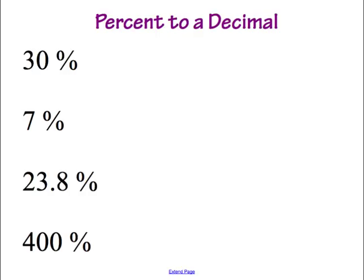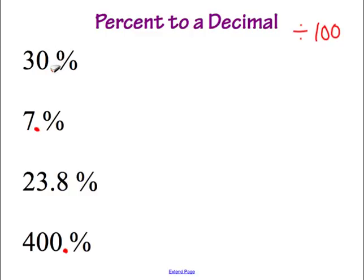We're now going to practice going from a percent to a decimal. The previous example showed us how to go from a decimal to a percent, so now we're doing the opposite. Instead of multiplying by 100, we're going to divide by 100 — so instead of moving two spots to the right, we move two spots to the left. First, let's place our decimals: in 30%, the decimal falls right after 30; in 7%, right after the 7; in 23.8%, the decimal is already placed; and in 400%, we place the decimal after 400.